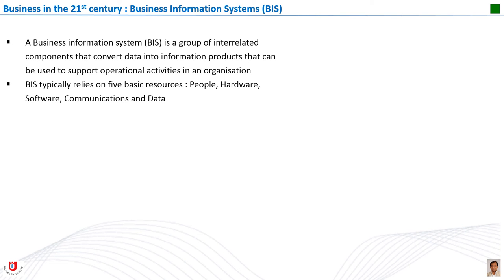To do things faster, better, and smarter, businesses need efficient information systems. A business information system is a group of interrelated components that convert data into information products that can be used to support operational activities in an organization. Business information systems typically rely on five basic resources: people, hardware, software, communication, and data. The speed, accuracy, and reliability of computer-based information systems mean they are able to handle repetitive tasks involving large volumes of data. They are best used in situations governed by clear and logical rules, making them ideally suited to transaction processing or process control applications, most widely at the operational level of an organization.